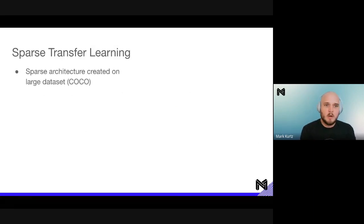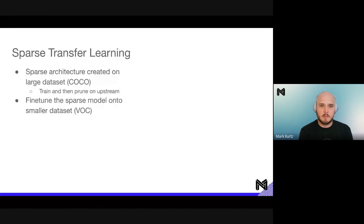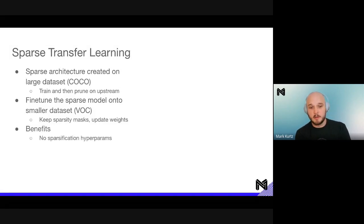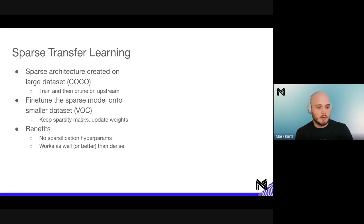Let's talk over sparse transfer learning. We start with a sparse architecture created on a large dataset such as COCO — we train and then prune on that upstream. Then we fine-tune the sparse model on a smaller dataset such as VOC. When fine-tuning, we preserve those masks and update only the weights. The benefit is there are no sparsification hyperparameters to deal with — it's exactly the same as doing dense transfer learning. In general, it works as well or better than dense. Sparse models generalize very well and don't overfit as much to downstream datasets.